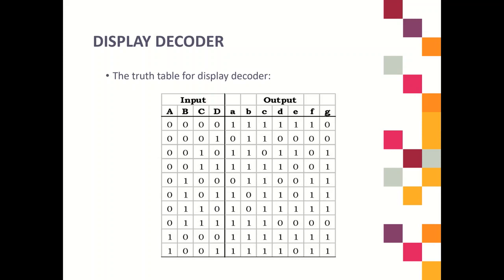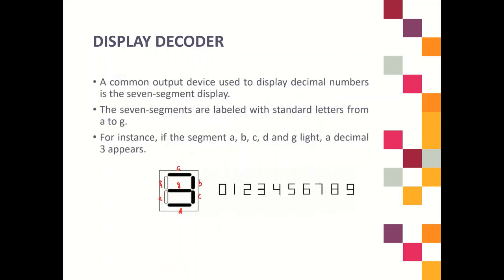If you want to display decimal 9, that's why we use 4 inputs: A, B, C, and D. The output is for the 7-segment, starting from A until G. To fill in the output values, we need to refer to the previous reference — the decimal values that can be represented using the 7-segment display.